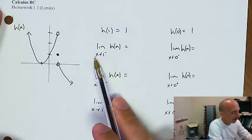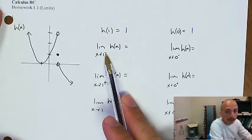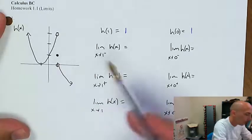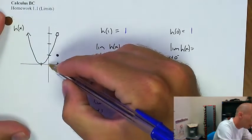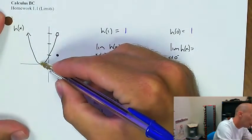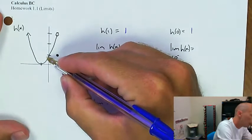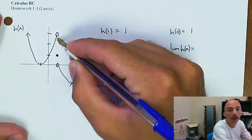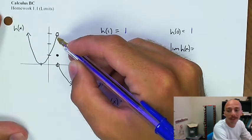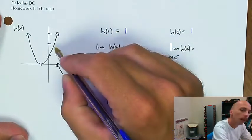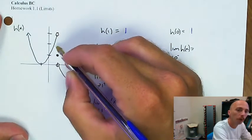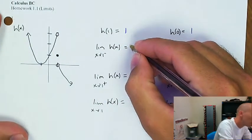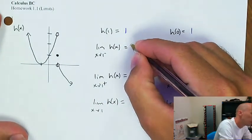The limit as x approaches 1 from the negative side of h of x — as x is approaching 1 from the negative side, what's happening? h of x is getting closer and closer to 3. We said in class that approaching from the negative side is approaching from the left. So as x approaches 1 from the left, h of x is approaching 3, so the limit equals 3.